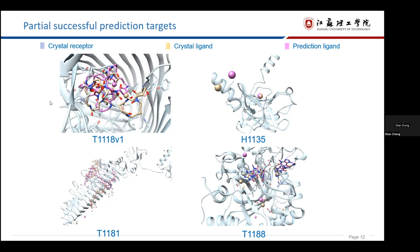For T1135, the pose of potassium ion is predicted correctly. You can see here T1135, but the pose of calcium ion was incorrect.